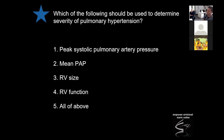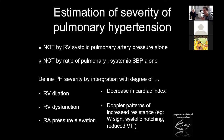Quiz question: which of the following should be used to determine severity of pulmonary hypertension? Peak systolic pulmonary pressure, mean pulmonary artery pressure, RV size, RV function, or all of the above? All of the above — it's always all of the above. You've got to take everything together. To get pressure going, you've got to have something making the pressure. If that something is not very strong, you will not create as much pressure. So you can't estimate severity of pulmonary hypertension based on one thing alone.